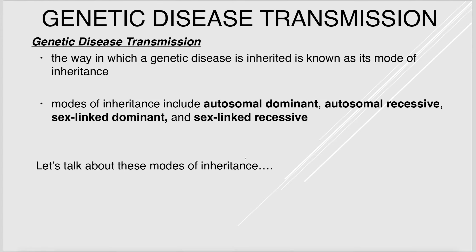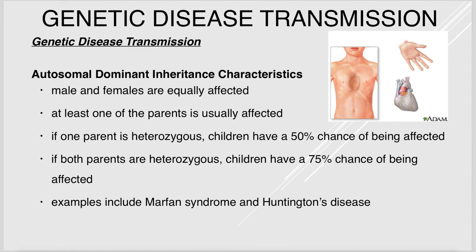Genetic diseases can be transmitted in several ways: autosomal dominant, autosomal recessive, and sex-linked. With autosomal dominant inheritance, a person is affected if they inherit just one copy of the bad allele. Males and females are equally affected, typically one parent is affected, and it doesn't skip generations. If one parent is heterozygous, children have a 50% chance of being affected; if both are heterozygous, 75%. Examples include Marfan syndrome and Huntington's disease.